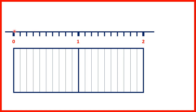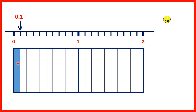Here we have a number line with 0, 1, and 2 labelled. To get from 0 to 1, we have 10 lines, which means that each of these lines stands for 1 tenth. Below, we also have two big rectangles, and each rectangle is split into 10 pieces, so this will help us count in tenths. If we shade one of our pieces on our rectangle, we have 1 tenth, and as a decimal, we write 1 tenth as 0.1.